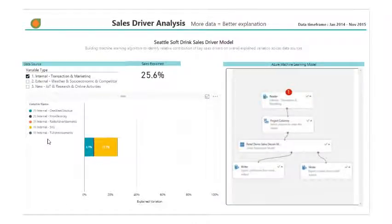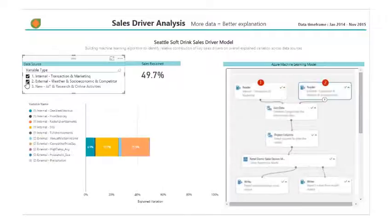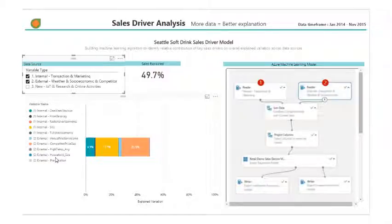In order to improve our model, we can take external data and add it into the model to see if that explains our sales variation. This external data set includes variables such as temperature, precipitation, household size, annual income, and competitor price gap. This additional information helps a bit — variations explained improves to near 50%.